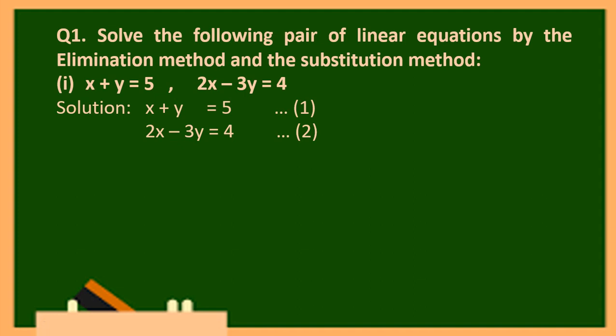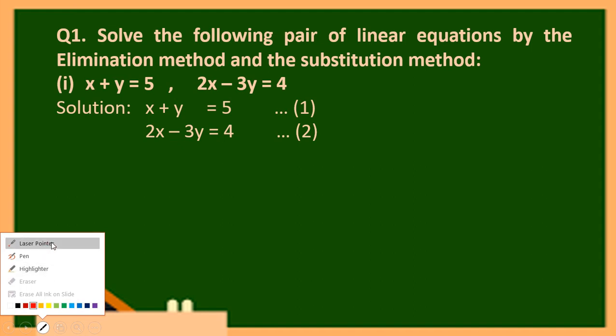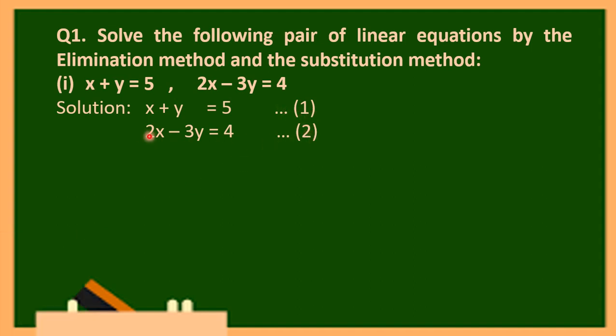The given two equations are: x plus y equals 5, and 2x minus 3y equals 4. In these two equations we have to perform the elimination method. As the name suggests, we have to delete or eliminate one of the variables — either x or y.